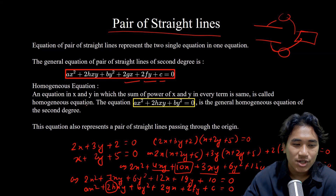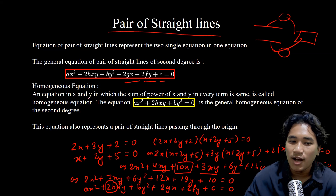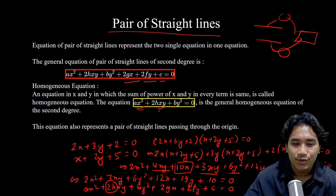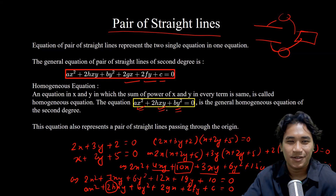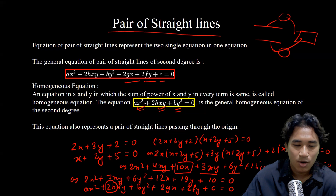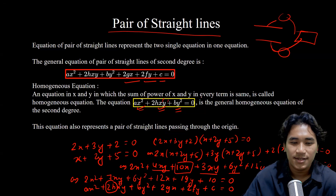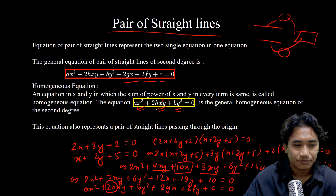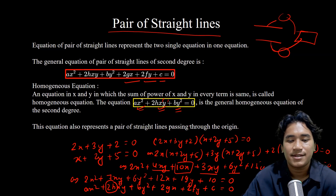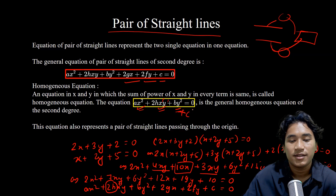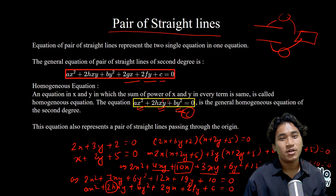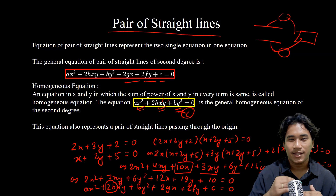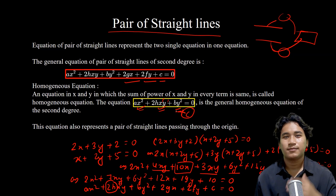It is a homogeneous equation — an equation in x and y in which the sum of powers of x and y in every term is the same. It is the homogeneous equation of second degree of a pair of straight lines. This equation also represents the pair of straight lines passing through the origin, since the x-intercept and y-intercept are both zero.